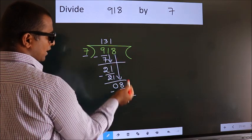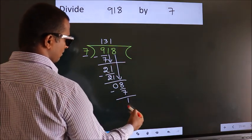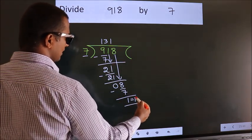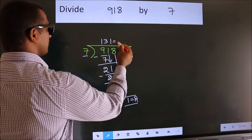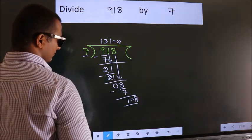No more numbers to bring it down. So we stop here. This is our remainder. This is our quotient.